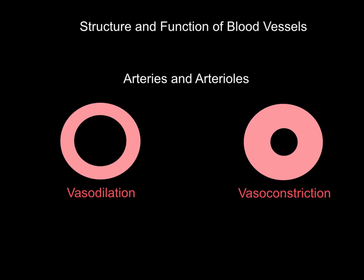What I've got here are two cross-section diagrams of an artery or arteriole. There are two terms that if you've watched the video on redistribution of blood you'll already know: vasodilation and vasoconstriction. This is something that arteries and arterioles can do.